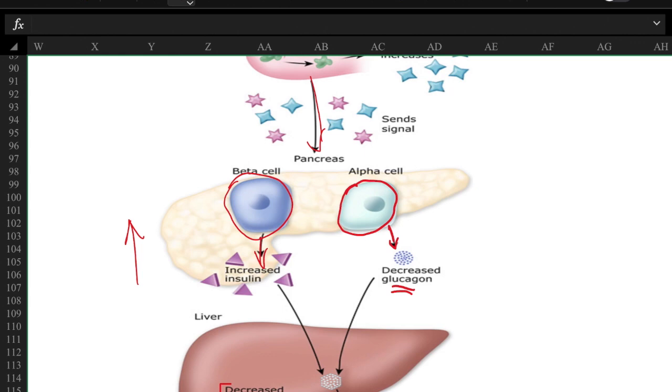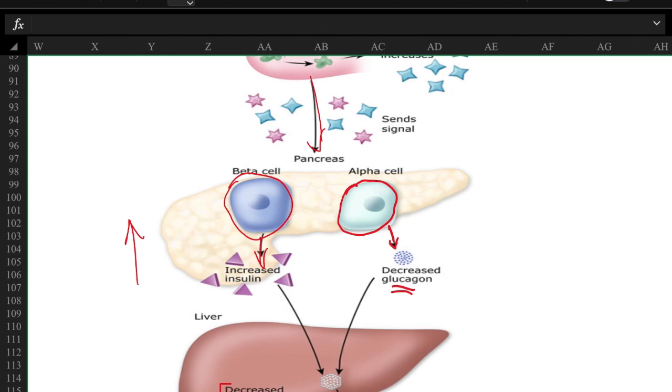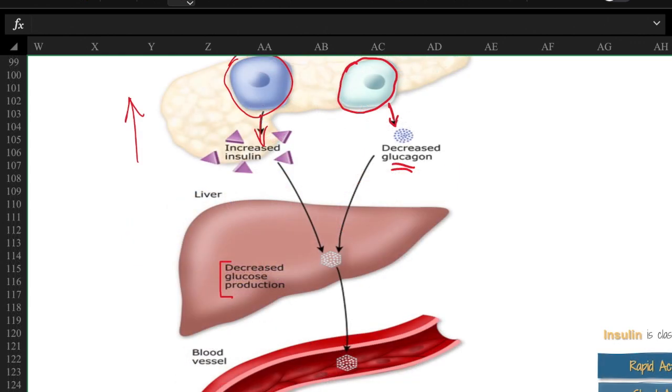The second thing they're going to do is trigger the alpha cells to decrease their release of glucagon. Remember that's where the glucagon is formed and released. We talked about how insulin will take the glucose that is in the blood and string it together into these glycogen chains and then store it in the liver.